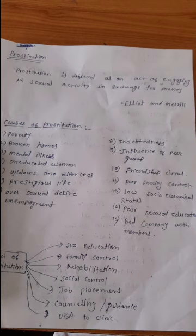Next is divorce. Divorce is a big problem in family and society. Due to divorce, some women exchange themselves for money. Next is prestigious life, then over sexual desire, then unemployment — due to deficiency of jobs, prostitution may increase in society. Next is independence, and influence of peer group — meaning bad company of friend circle and family can lead to prostitution.